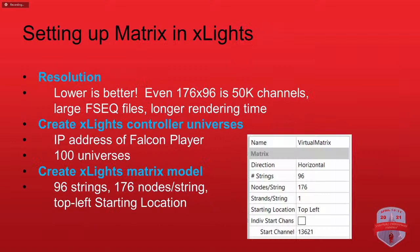Once the virtual matrix is set up in Falcon Player with the correct channels, height, and width, go into xLights and set up Falcon Player as a controller device using its IP address so xLights knows where to send the matrix data. You can then add any xLights effects — text, animations — to that matrix model and they'll be embedded in your FSEQ file. When Falcon Player plays it, the projector goes into a digital pixel mode and behaves like a big virtual matrix.